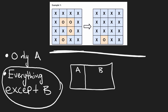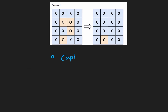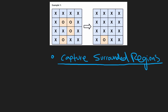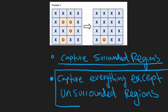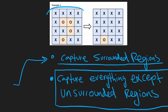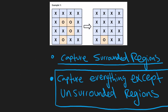So how is this going to be helpful in this problem? They told us to capture the surrounding regions only. Another way of saying that is: capture everything except the unsurrounded regions. In other words, capture the entire board except for the region connected to the border. Any region in the board connected to the border — whether there are O's at the top, sides, or bottom — we are not going to capture those.